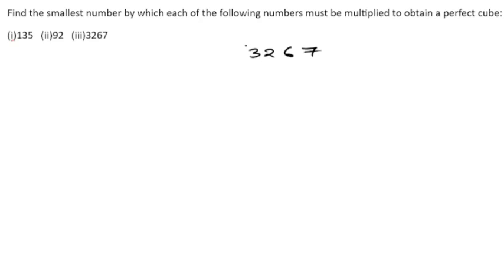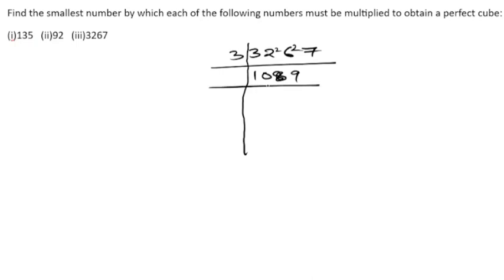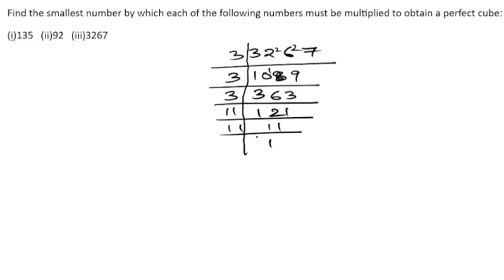In 3267, let us take out the factors using the 3 table. Dividing: 3×1089=3267, 3×363=1089, 3×121=363. Now 121 — we try 3 again: 3×40=120, so 3 doesn't divide 121 evenly. Trying 11: 11×11=121, and 11×1=11. So 3267 = 3 × 3 × 3 × 11 × 11.